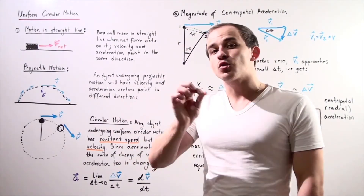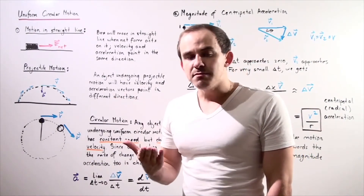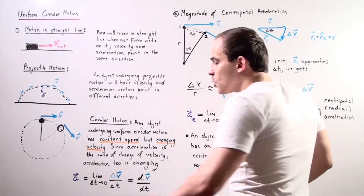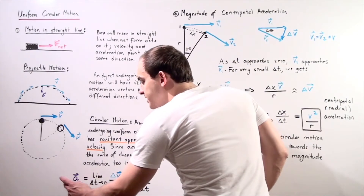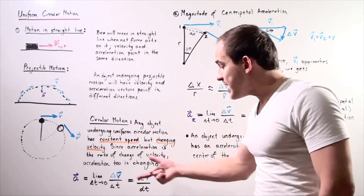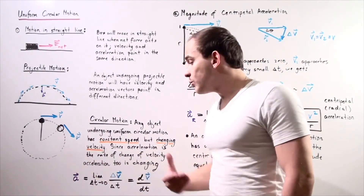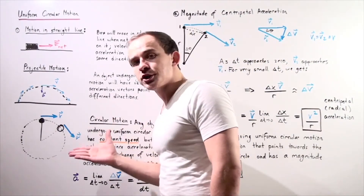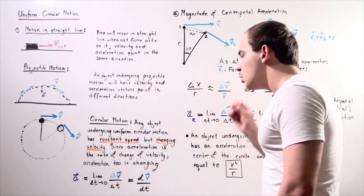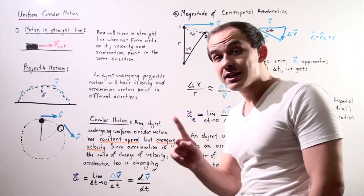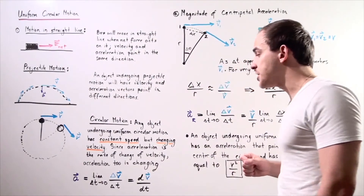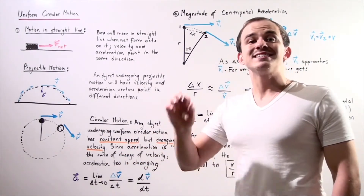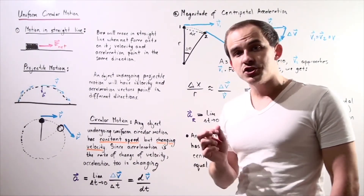Recall that acceleration is the rate of change in velocity. Because our velocity is changing, that means our acceleration is also changing — in other words, our object is in fact accelerating. The formula for acceleration is the limit of the ratio of change in velocity over change in time as the change in time approaches zero, or simply the derivative of our velocity vector function with respect to time. Any object undergoing uniform circular motion has constant speed, but its velocity is changing because the direction of motion is changing, so the object is accelerating.